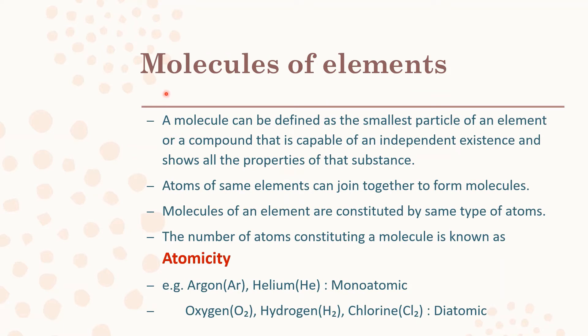What do we mean by molecules of an element? An element is metals, non-metals, or metalloids. For example, copper — when we take a molecule from copper, all the properties of copper are exhibited by that single molecule. That molecule contains atoms of the same type, because it is an element. An element is a pure form of a substance, and a substance is a pure form of matter.